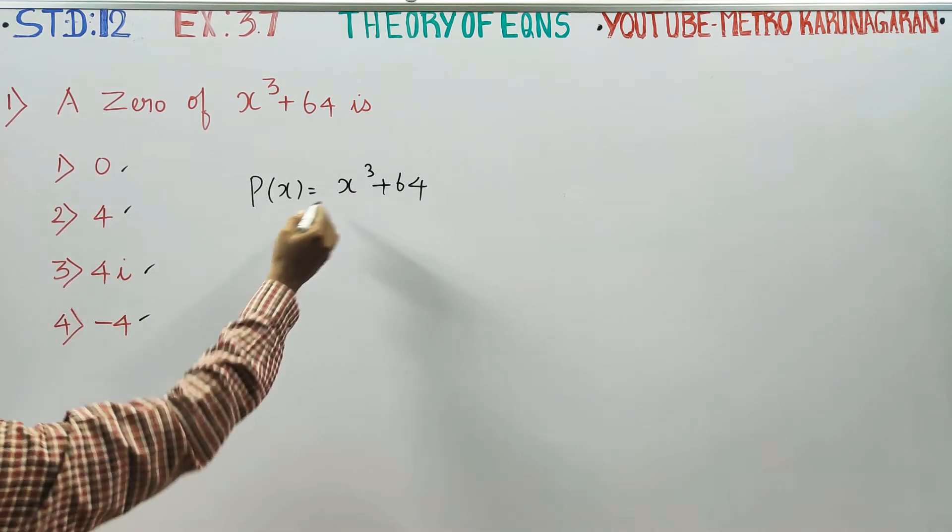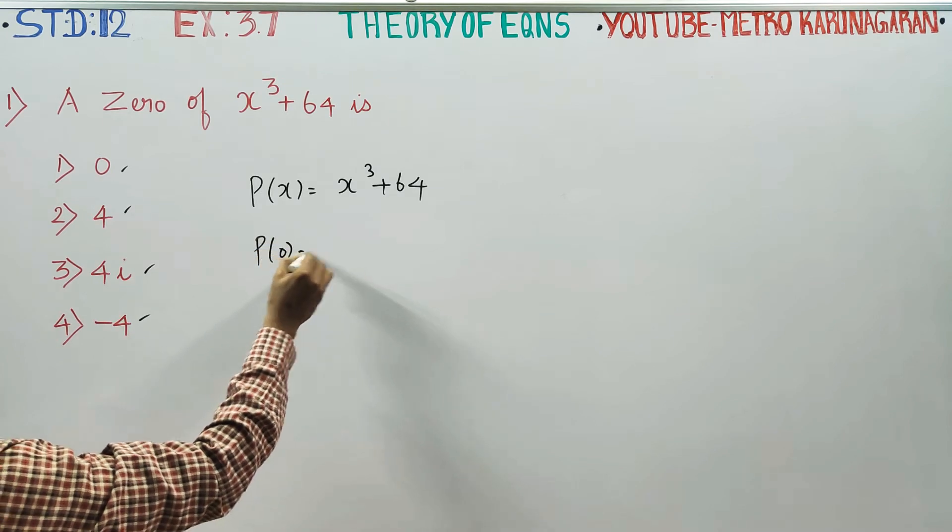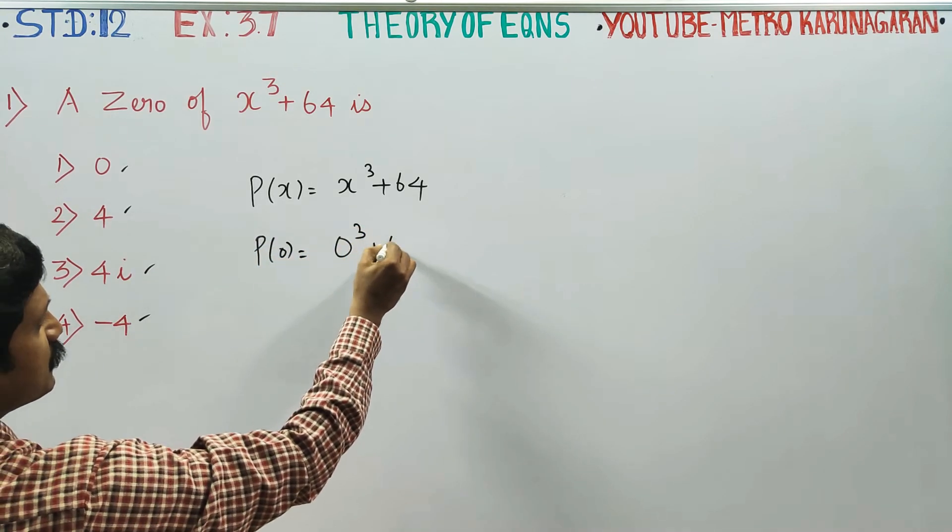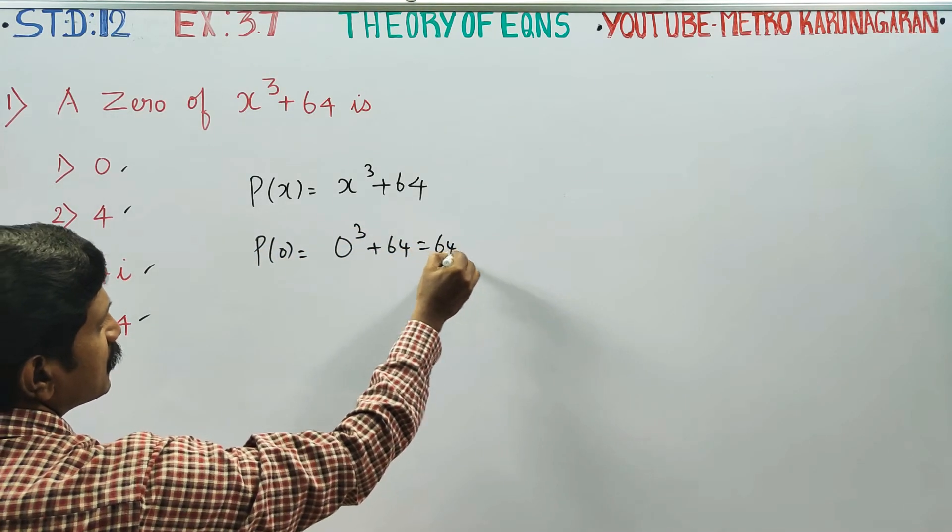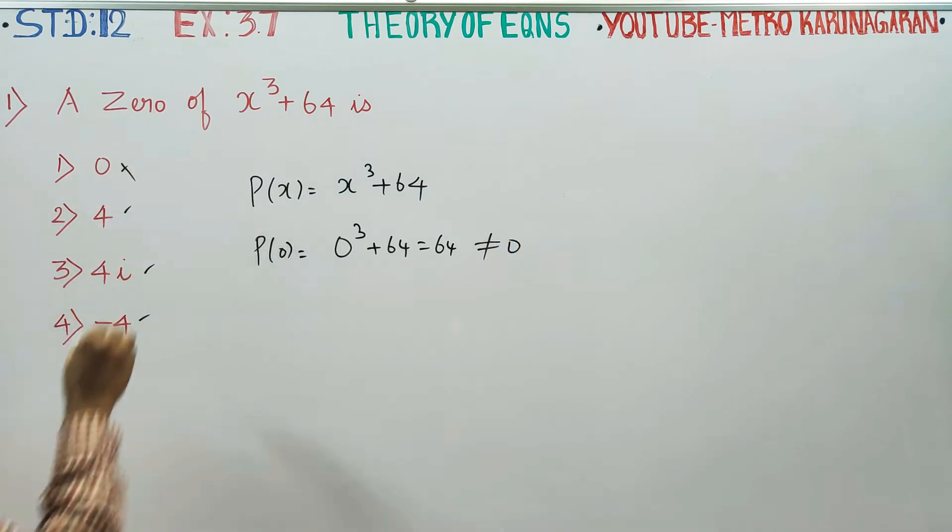For example, substitute P(0). It is 0³ + 64, that is 64. This is not equal to 0, therefore this is not your answer.